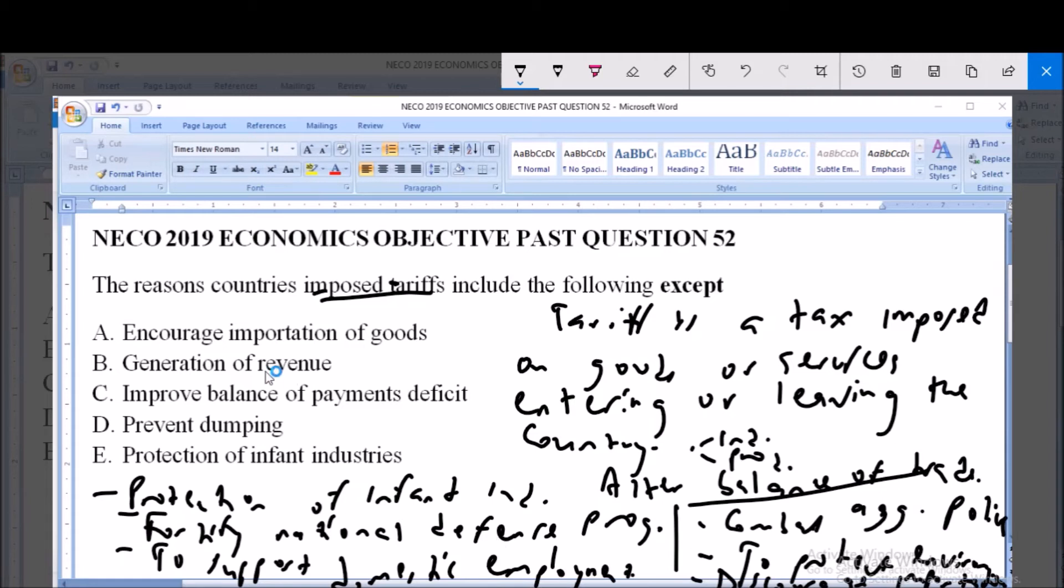Now option A says to encourage importation of goods. This isn't usually a reason why governments impose tariffs. They usually impose tariffs on imported goods to discourage importation into the country.